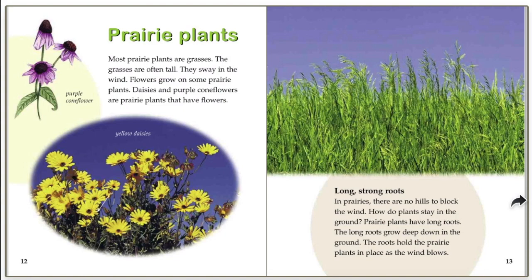Long, strong roots. In prairies, there are no hills to block the wind. How do plants stay in the ground? Prairie plants have long roots. The long roots grow deep down in the ground, and the roots hold the prairie plants in place as the wind blows.